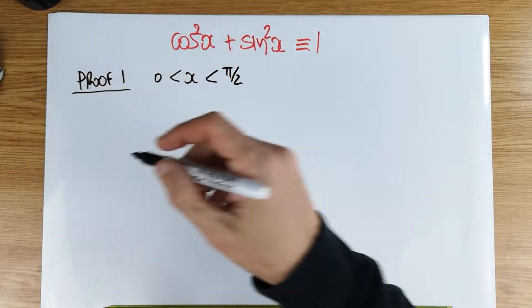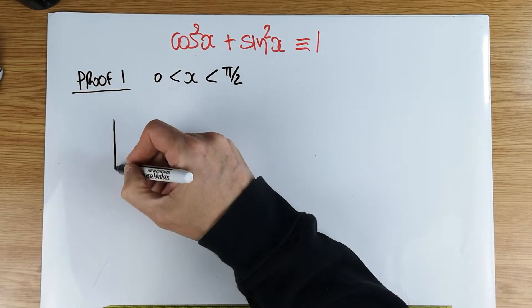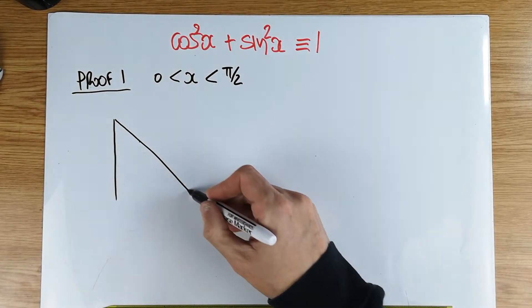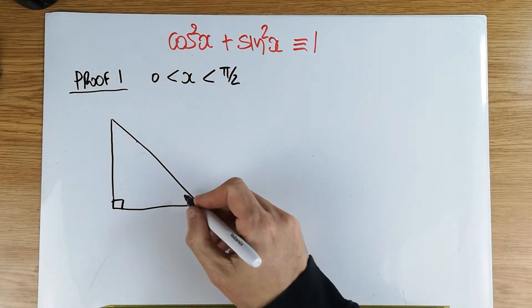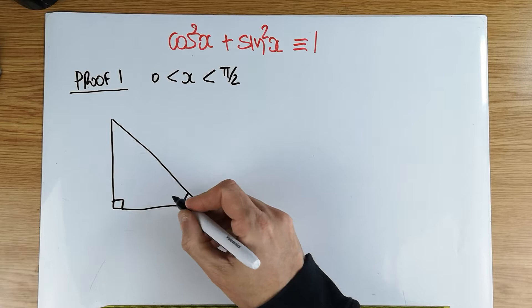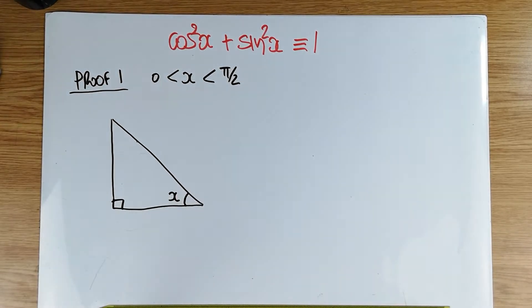This particular one is basically based on Pythagoras' theorem. You draw a right angle triangle and you're going to label one of its acute angles as x. It doesn't really matter which one. Let's say we call this particular angle as x.